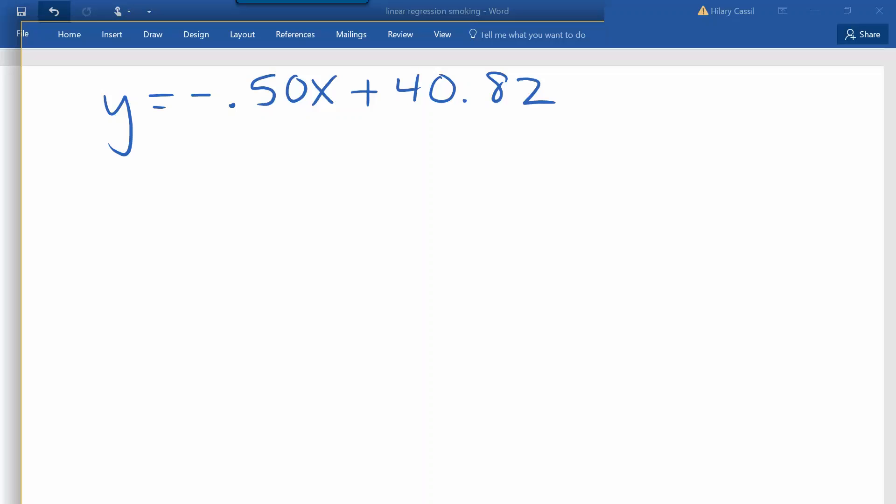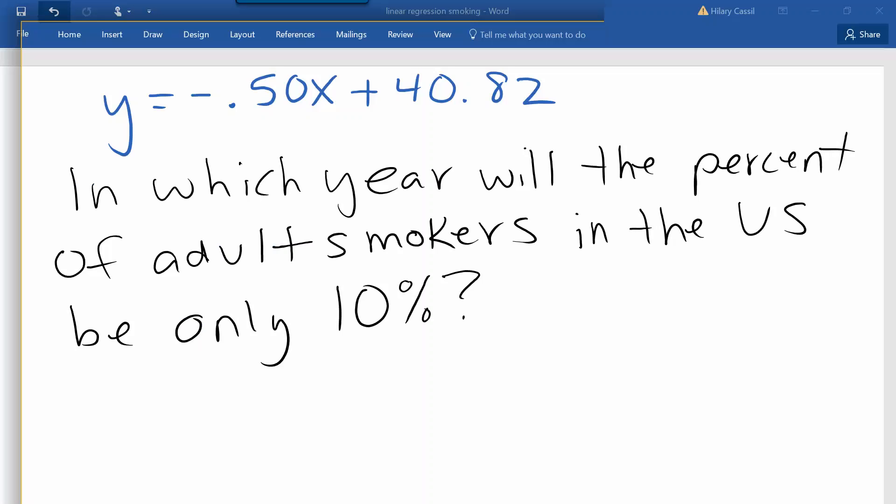And let's say we want to use this equation to determine in which year will the percent of adult smokers in the U.S. be down to only 10 percent. So remember, the percentage were our y values, so we're going to go ahead and replace y with 10 and solve.